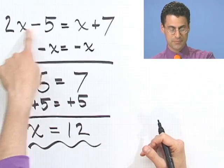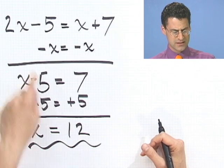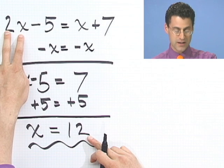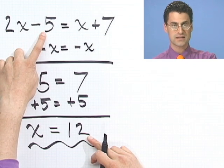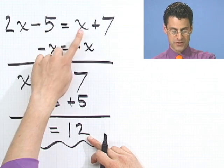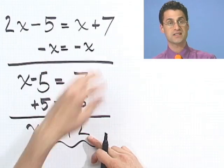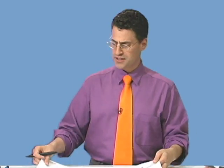Anyway, you can always check your answer, by the way, by taking the 12 and placing it back in on both sides for x and making sure this is OK. Let's just do that together in our heads. If I put in a 2 here, 2 times 12 is 24. 24 minus 5 is 19. And if I put a 12 in on this side, and I take 12 and add to 7, I get 19. So I see 19 equals 19. We're OK. So that's all there is to solving linear equations.